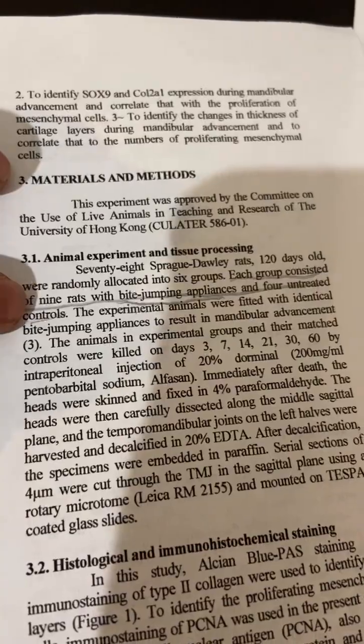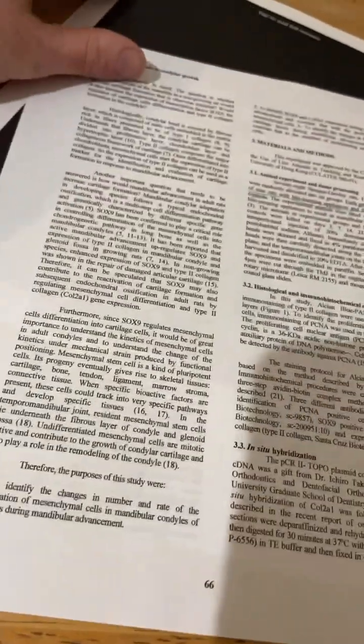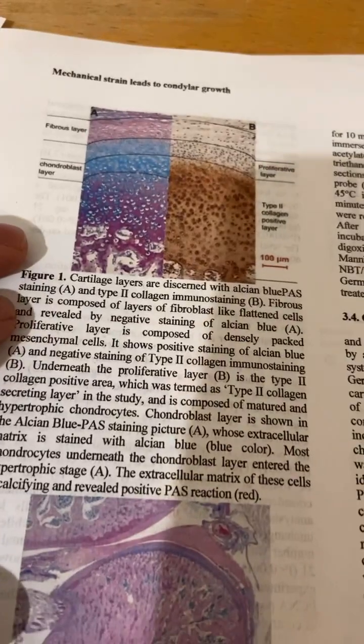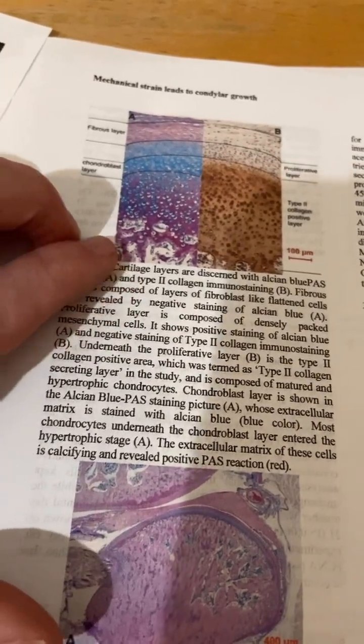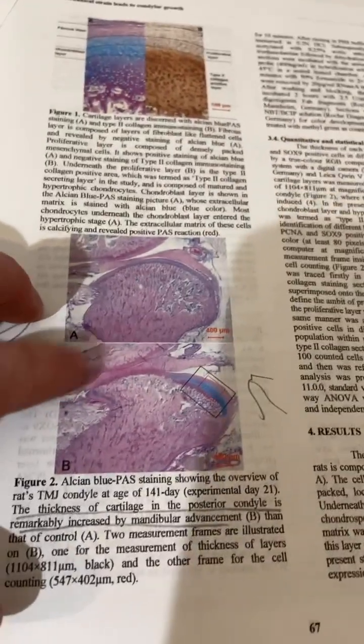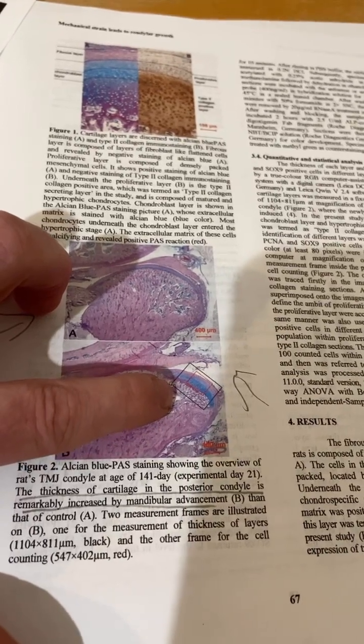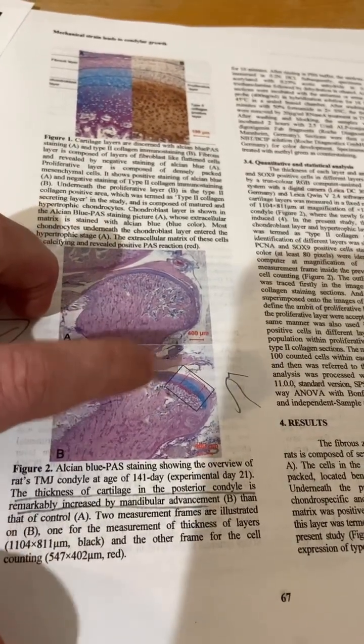Each group consisted of nine rats with bite-jumping appliances and four untreated controls. So here's some of the changes in the cells. But here is what is absolutely amazing. See this cartilage growth right here? That is absolutely amazing.